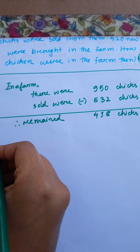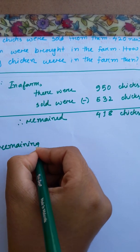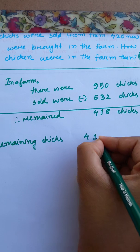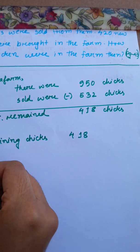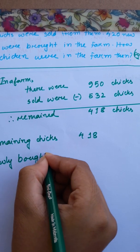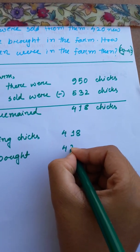So, we have to write it. Remaining chicks: 418. Newly bought: 420.